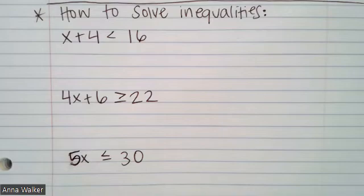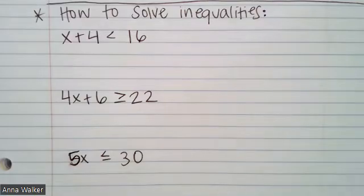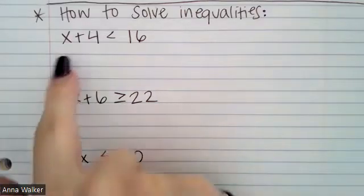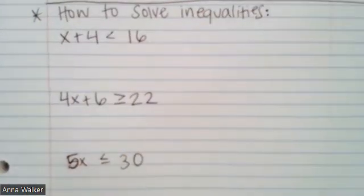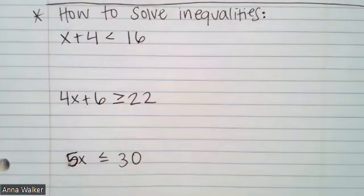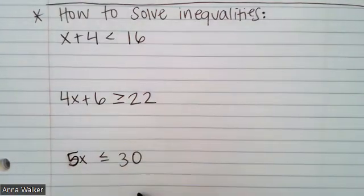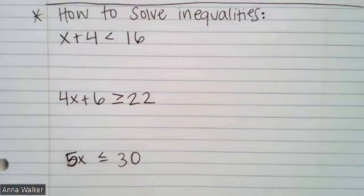If they only had equal signs, then they would be equations. Remember, equations have equal signs. So if I am trying to figure out the value of these variables, the variables in these equations are going to represent more than one number. Because instead of just saying x plus 4 equals 16, if I did that, x could only be one number. There's only one number when I add it to 4 that makes 16. But in this case, it says x plus 4 is less than 16. So there are a lot of numbers. If we add them to 4, it could be less than 16.